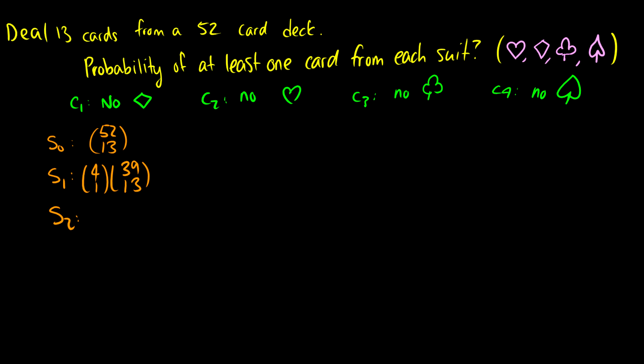If we have two conditions being met, then we're going to choose two of these conditions. And if we're choosing two of these conditions, then we're going to get no diamonds and no hearts, for instance. So we're taking out 26 possible cards we can pick from. So that just leaves 26 choose 13 cards left. Okay, and S3 is just going to be four choose three, and all the cards are going to have to come from the suit that is remaining.